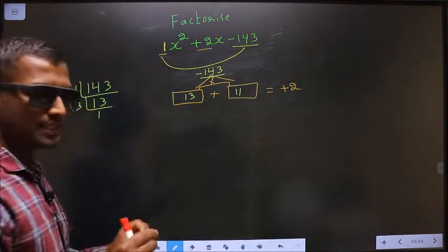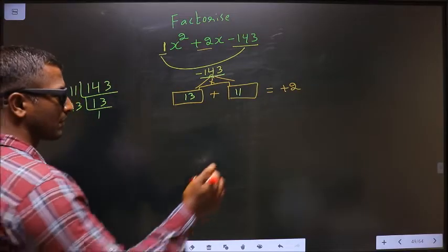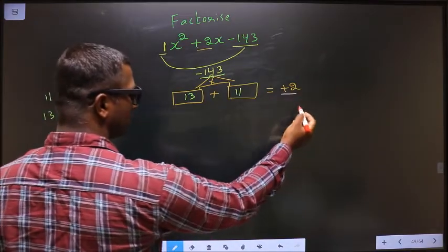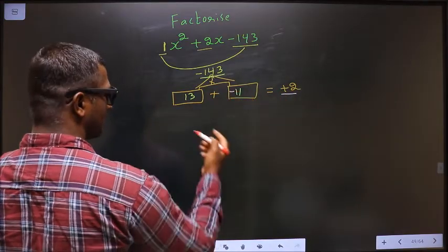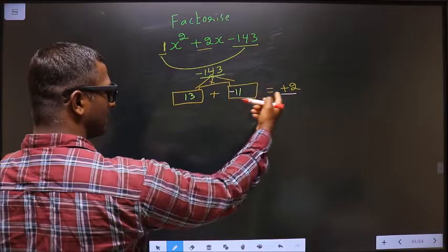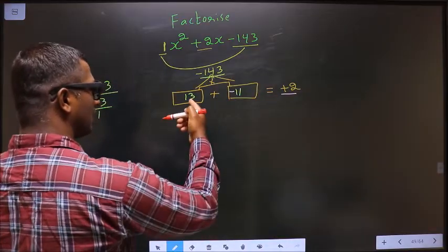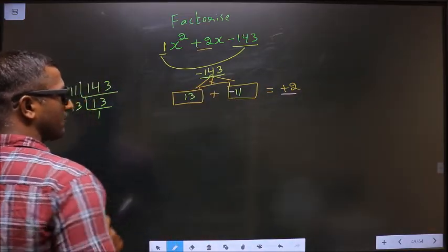Now you adjust the signs. Here I should get plus 2. To get plus 2, that could only happen if I put negative before 11. 13 minus 11 is plus 2. 13 into minus 11 is minus 143.